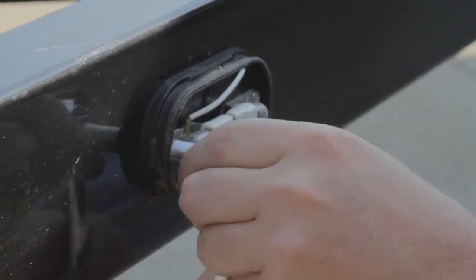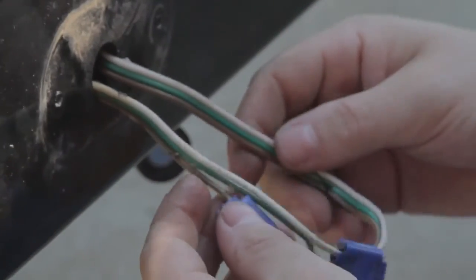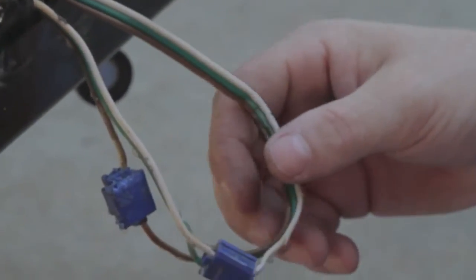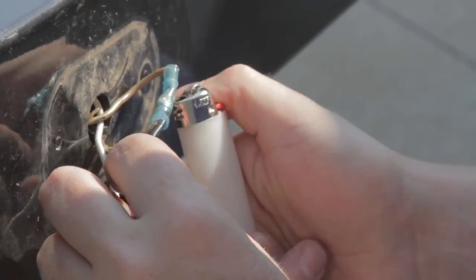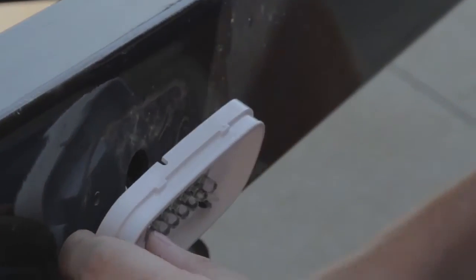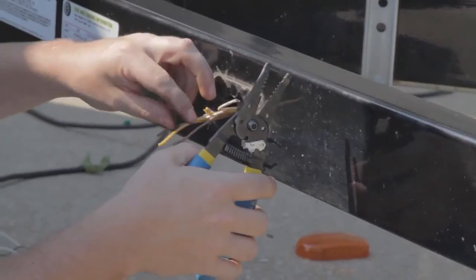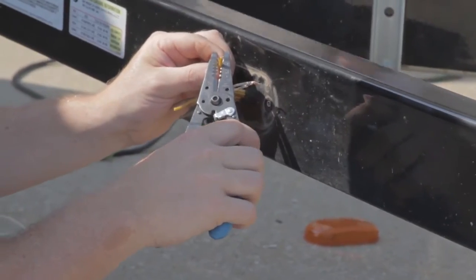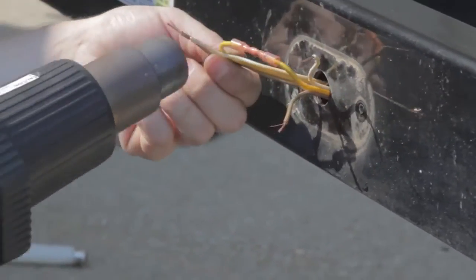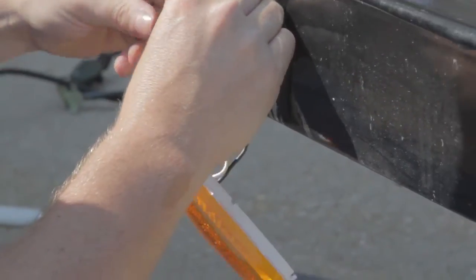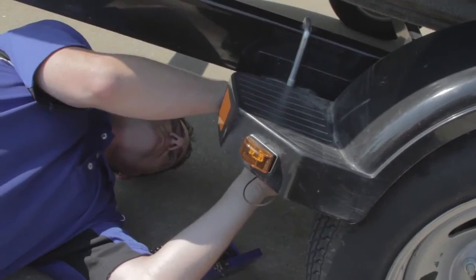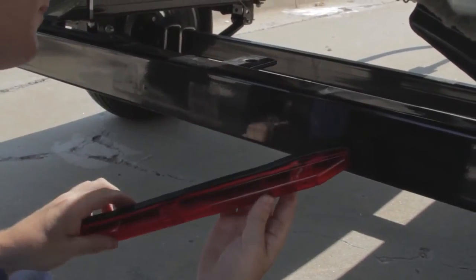As you replace the remainder of your lights, keep these three things in mind. One, make sure the light is grounded correctly. Two, don't pull or tug on the wires. And three, be on the lookout for any exposed wires or corrosion.